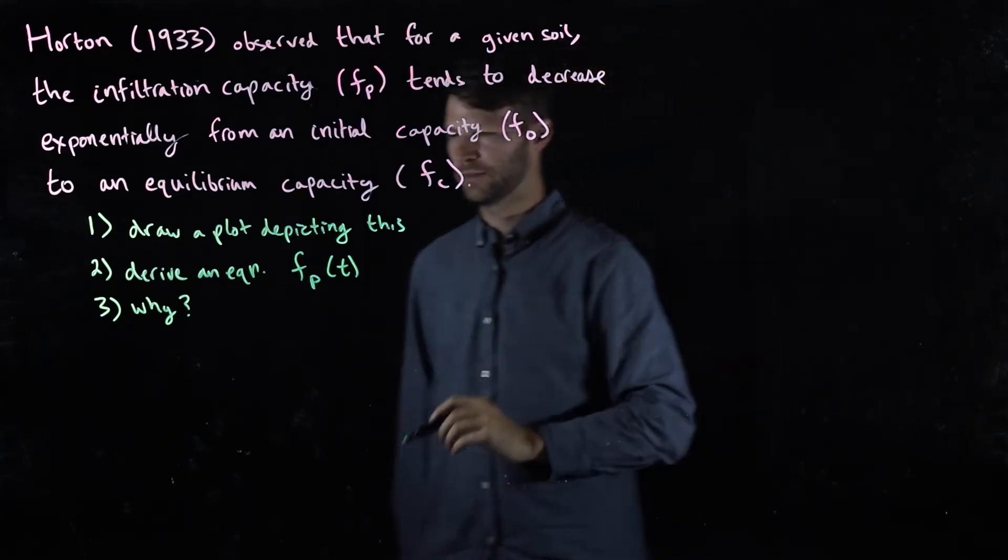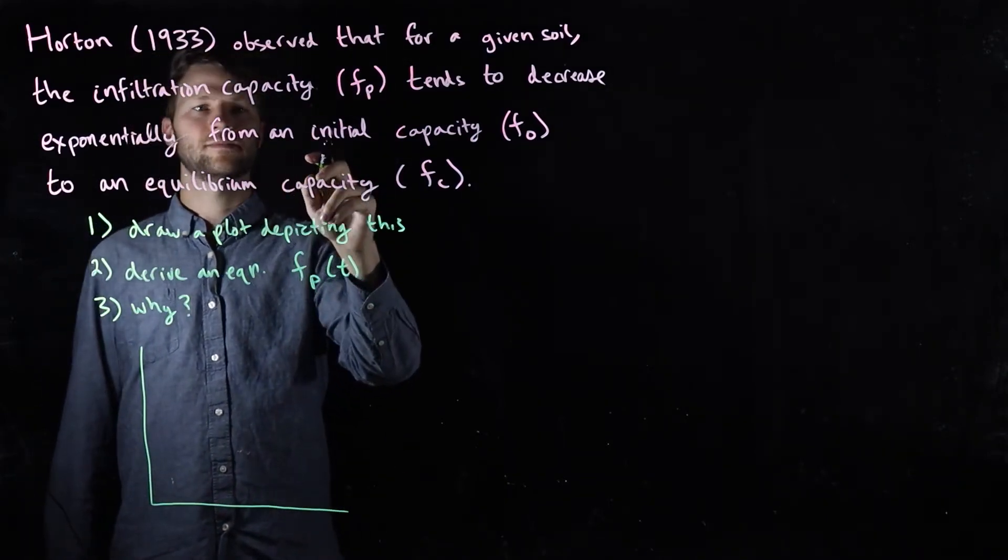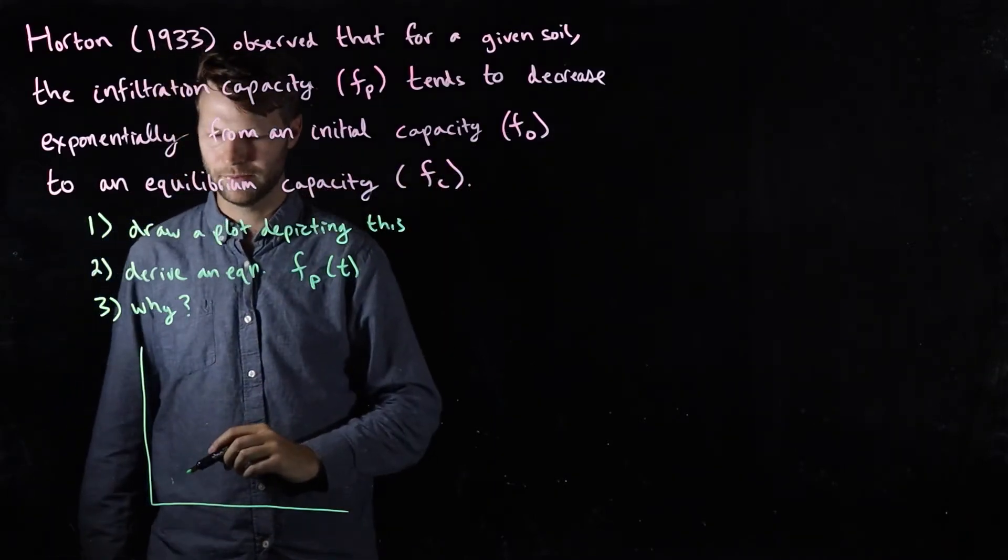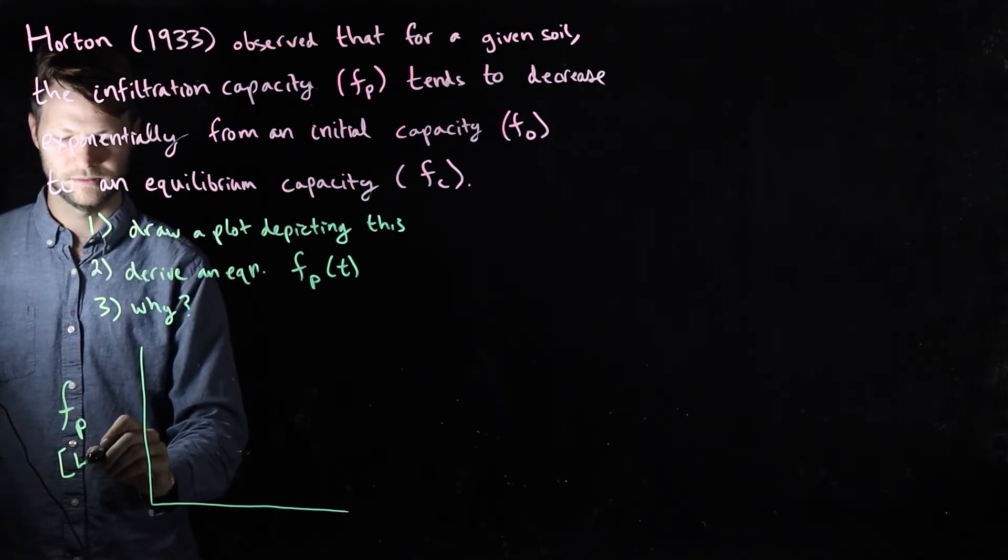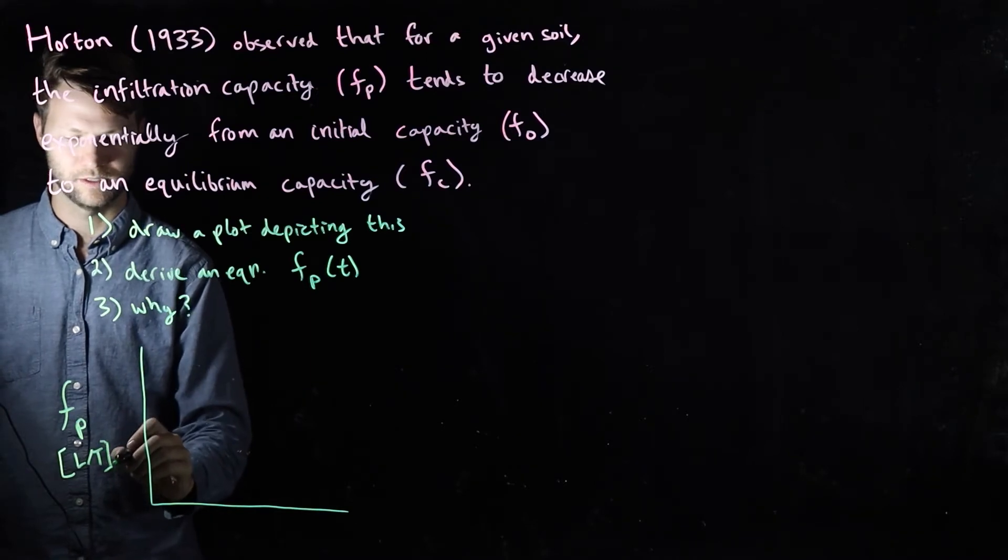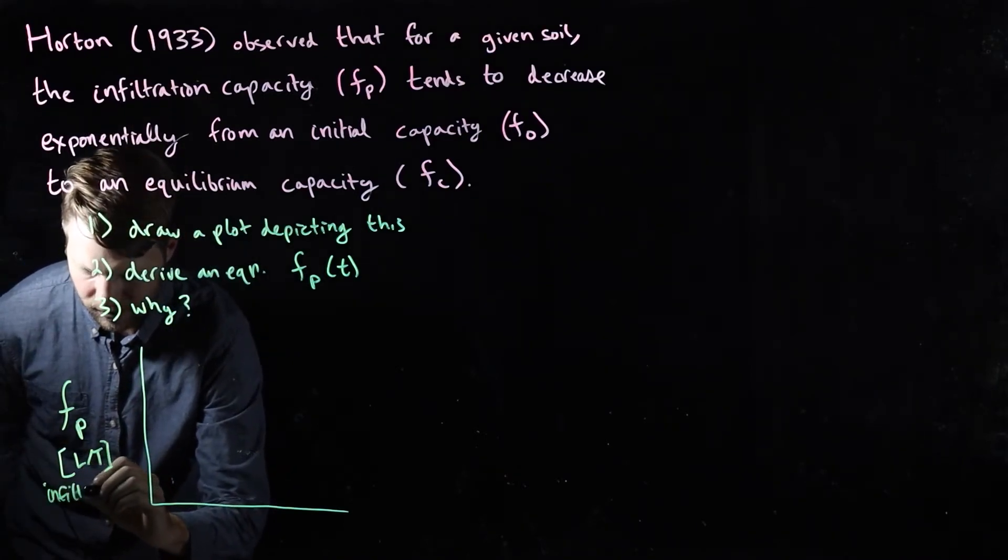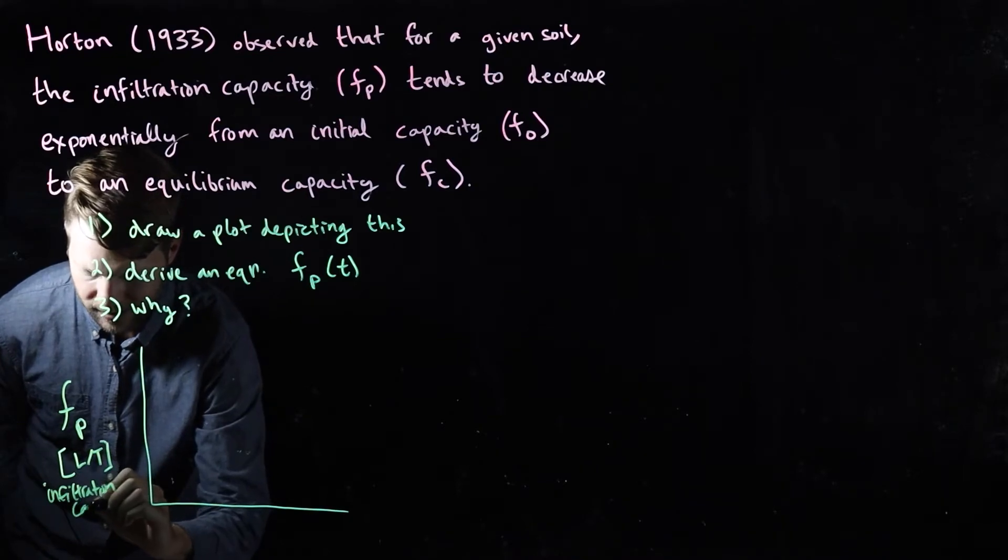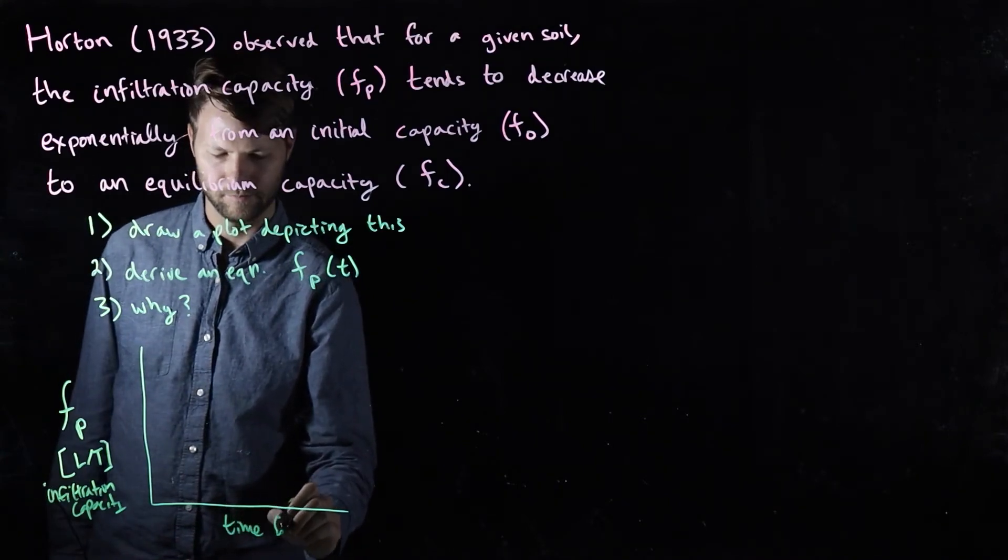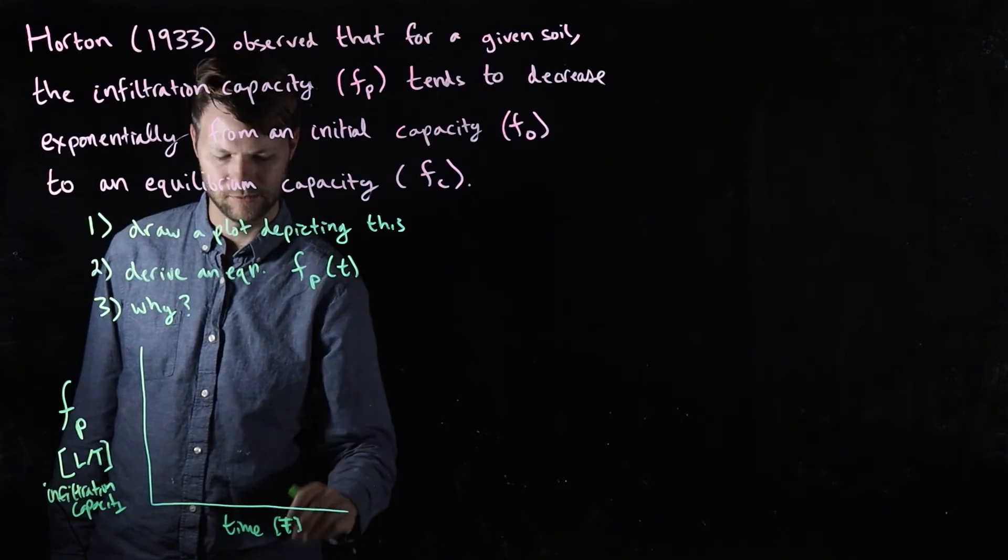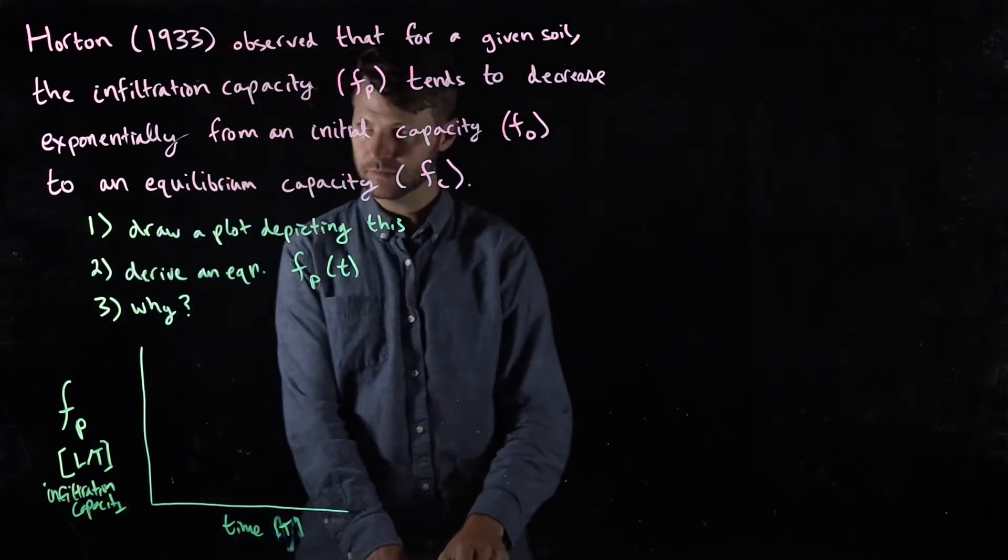Let's first draw the plot. We know it starts at some initial capacity f_0, so let me label my axes. This here is f_p, it has dimensions of length per time, it's an infiltration capacity. I'll label that here 'infiltration capacity,' and then this axis here will be time, T, dimensions of time.